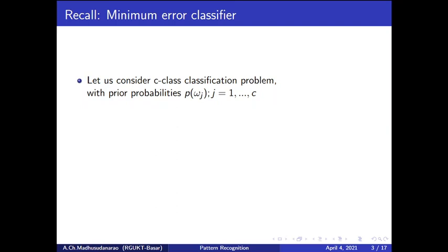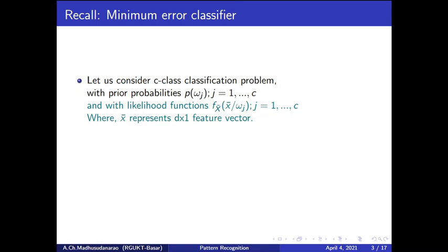Let us go back to the minimum error classifier. If you are having a C-class classification problem, the constant prior probabilities are P of omega 1, P of omega 2, and so on to P of omega C. And the constant likelihood functions are f(x-bar | omega 1), f(x-bar | omega 2), and so on to f(x-bar | omega C) — the likelihood functions for those C classes.